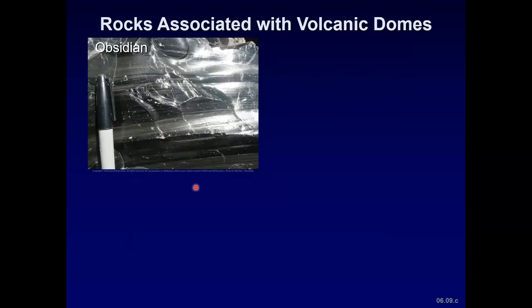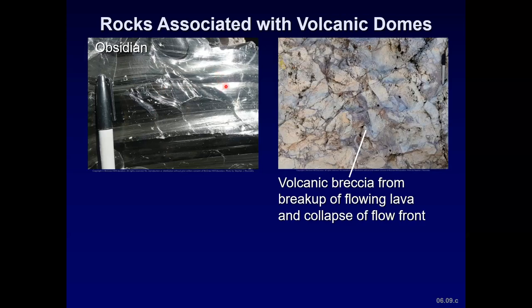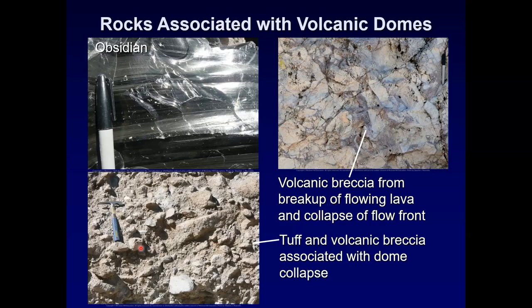Some of the rocks associated with volcanic domes are obsidian — volcanic glass that forms from rapidly cooling lava. It's dark but has a felsic composition. You can have volcanic breccia, where outer parts of the dome cool and fracture into blocks. You can also have tuff and volcanic breccia mixed together with the collapse of a dome.